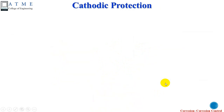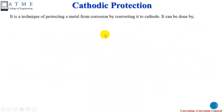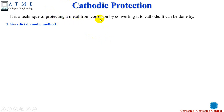Let us move on to the second part: cathodic protection. Cathodic protection is a technique where the metal is prevented from corrosion by converting it into a cathode. Generally, a metal undergoes corrosion if it acts as an anode. If we convert the base metal into a cathode, it will not be corroded. That is the idea behind cathodic protection — it is a technique of protecting a metal from corrosion by converting it into a cathode.